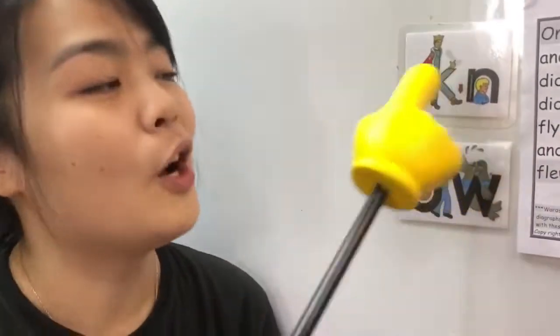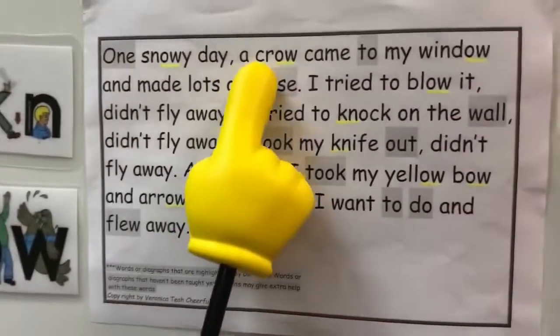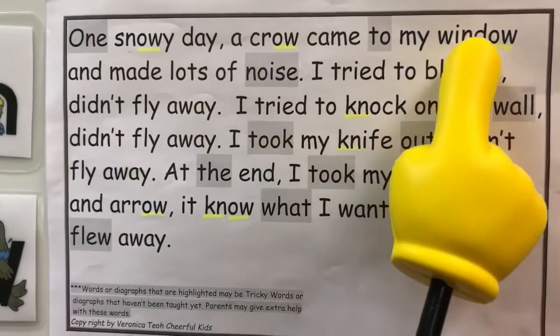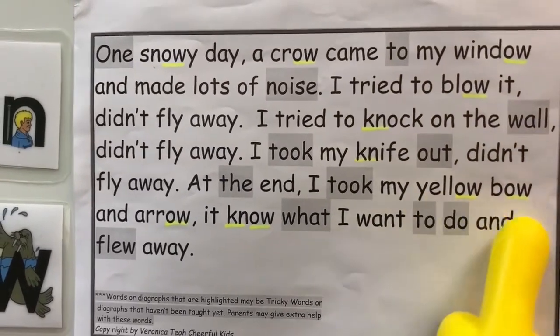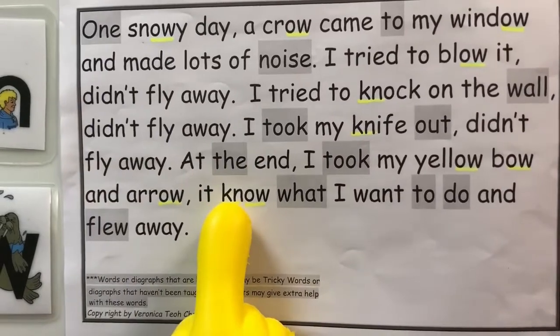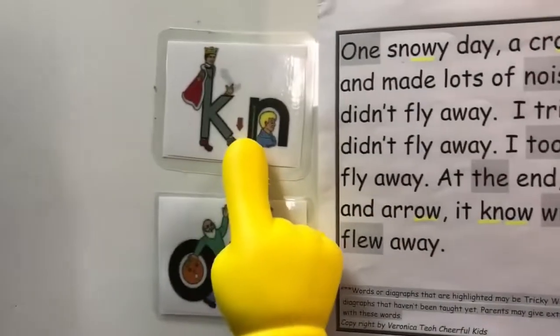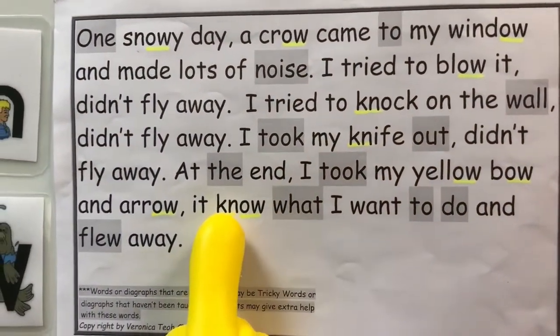For KN, the sound is N. O-W is the O sound. In the story, we have for the O sound: snowy, crow, window, blow, yellow, bow, arrow, and no. For KN, the N sound, we have: knock, knife, and also know. Were you able to find them?